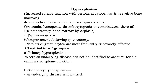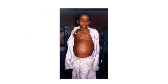Hypersplenism is classified into two groups: primary hypersplenism, where an underlying disease cannot be identified to account for the exaggerated splenic function; and secondary hypersplenism, where an underlying disease is identified.